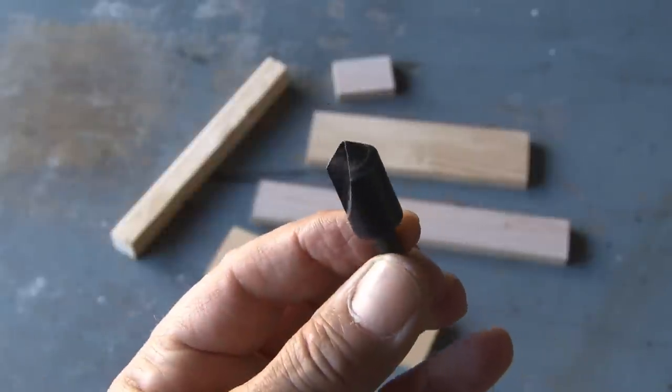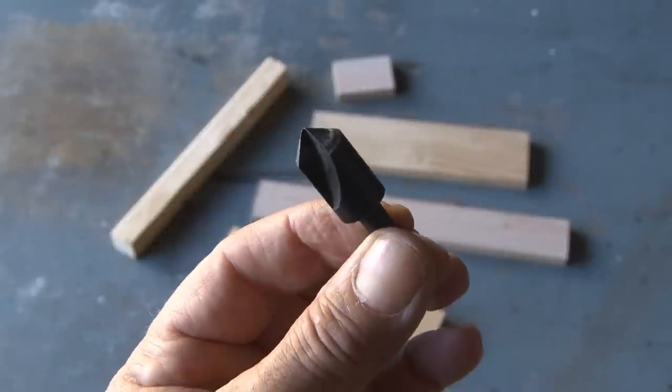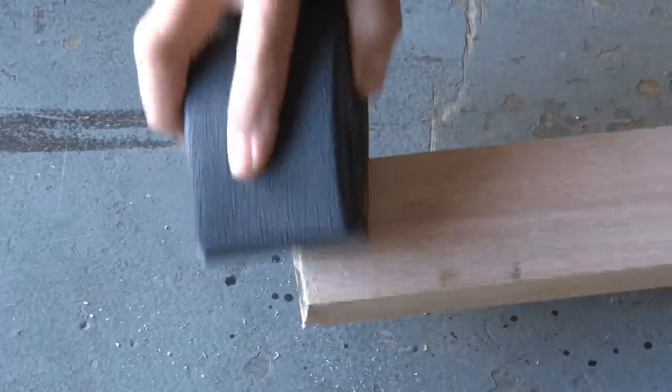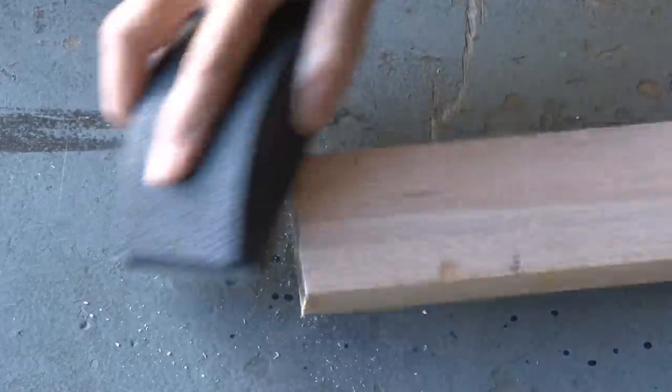And for a nice clean job, we'll countersink those screws, which will put them flush with the wood. We'll start by using a sanding block just to sand all the edges to make sure there's no burrs or splinters on our wood.